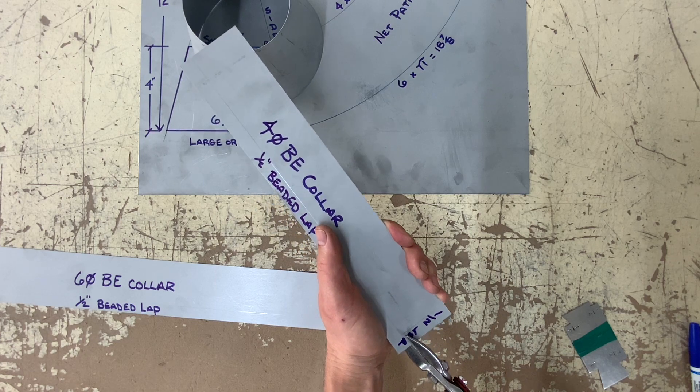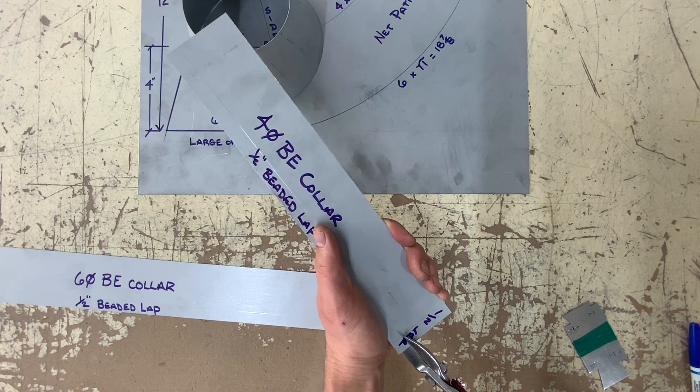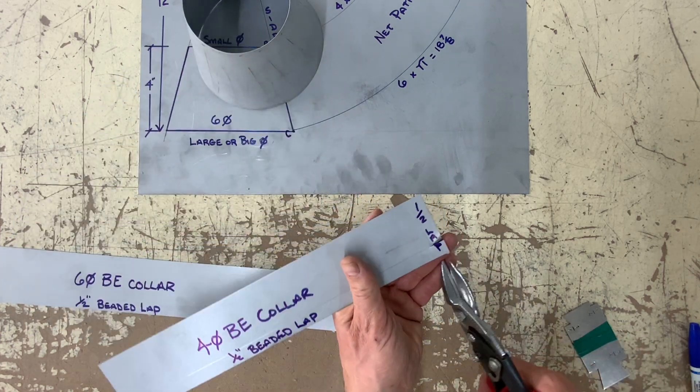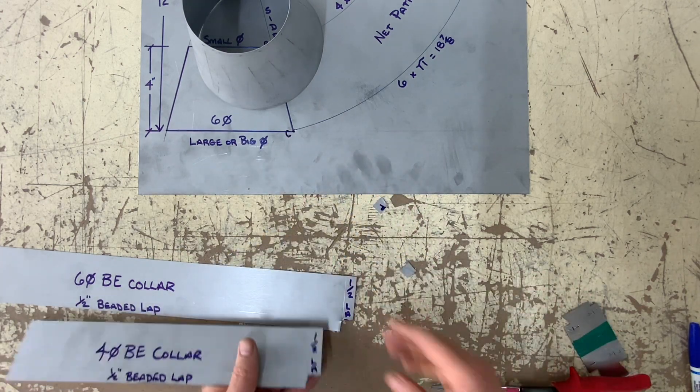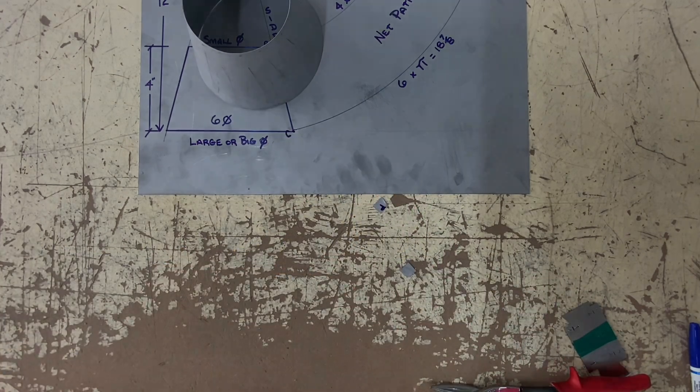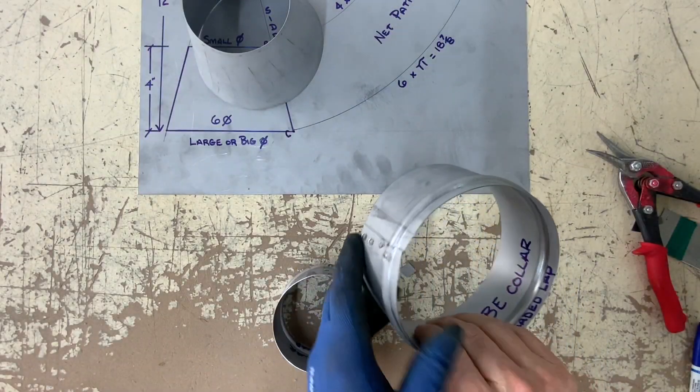And here I always notch out where a seam and connector meet. That prevents double thicknesses of metal at certain spots.